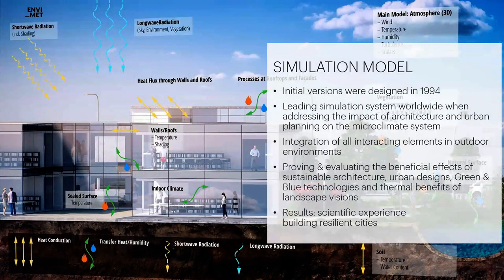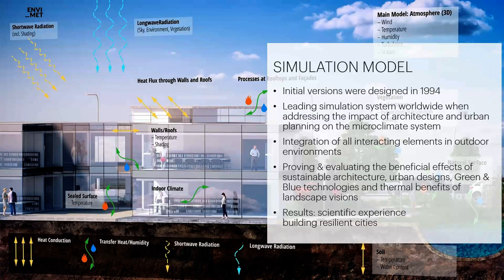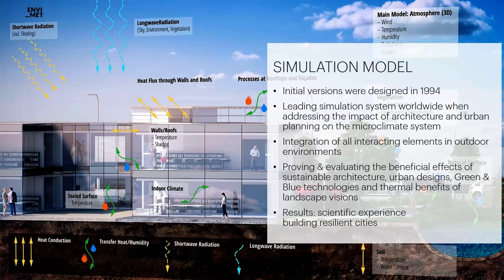The simulation model was initially designed by Michael Bruce in 1994, who is still head of development. It is the leading simulation system worldwide when the impact of architecture and urban planning on the microclimate shall be examined. Modeling microclimate, however, is a very challenging task, since all elements of the outdoor environment are connected to each other. EnviMet, as a holistic model, tries to include all parts that play any kind of role in that system.